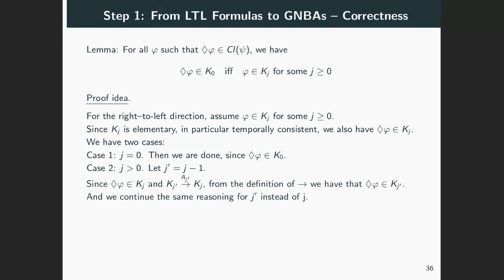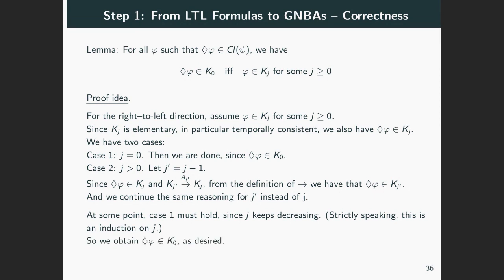And we can keep repeating this argument. Clearly, j cannot decrease forever without becoming zero. So at some point we must have case one, which gives us the desired fact: eventually φ is in K₀. Okay, so this concludes the proof of the lemma.